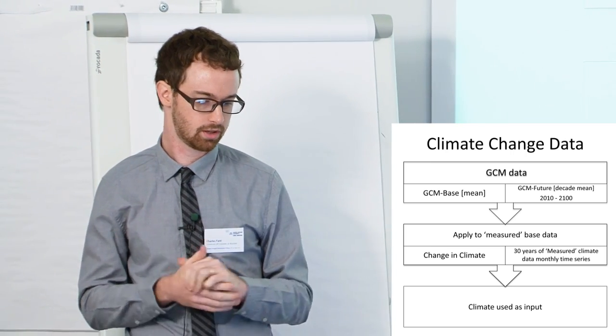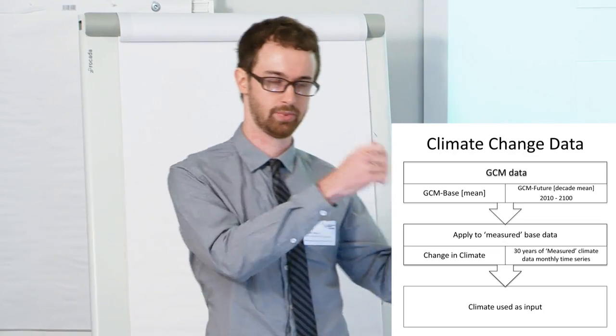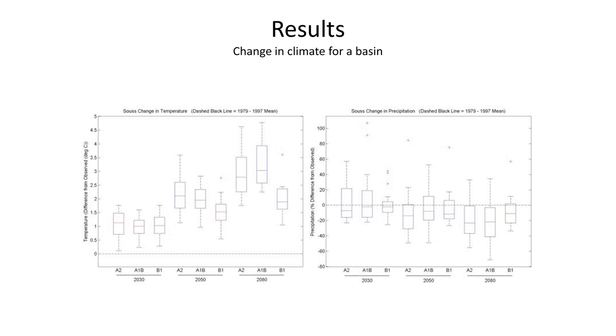And I should say for the future, we ended up with average decadal changes for each month. So 12 values for each month. And I'm sorry, 12, 12 values total. And we took the 30 years, applied that change, and then took the mean of that. So my point being that we're taking a lot of, we're doing a lot of averaging. And even with doing all this averaging, we end up with...